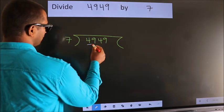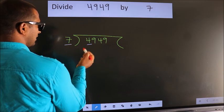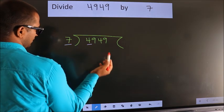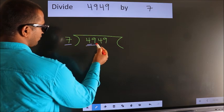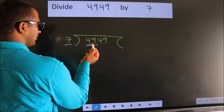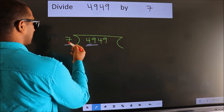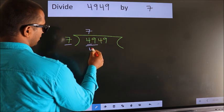Here we have 4. Here 7. 4 is smaller than 7, so we should take 2 numbers: 49. When do we get 49 in the 7 table? 7 sevens equals 49.